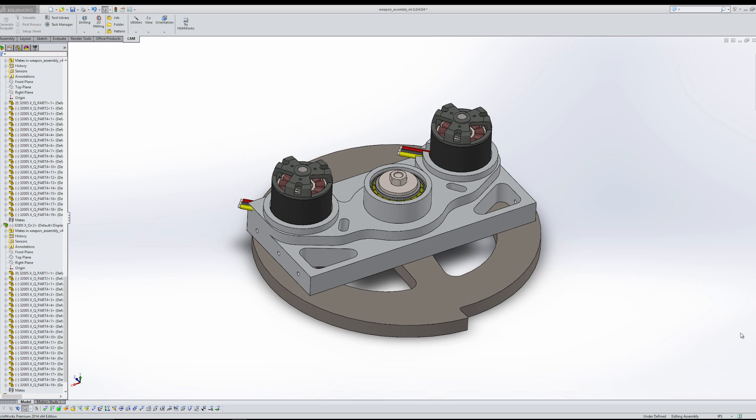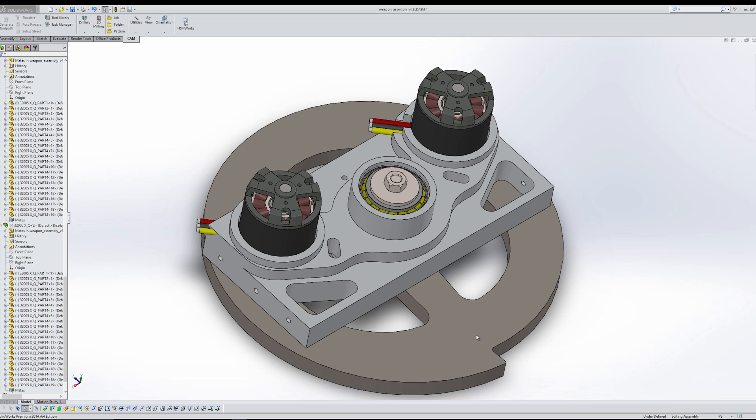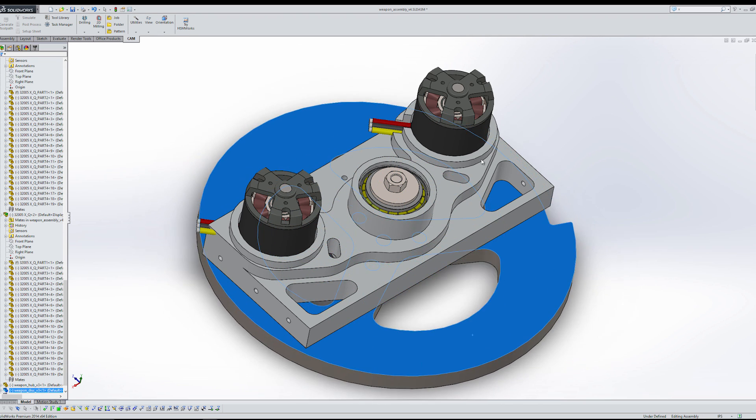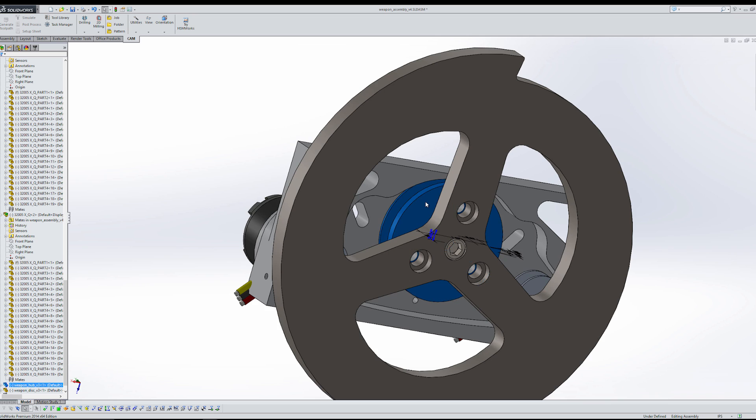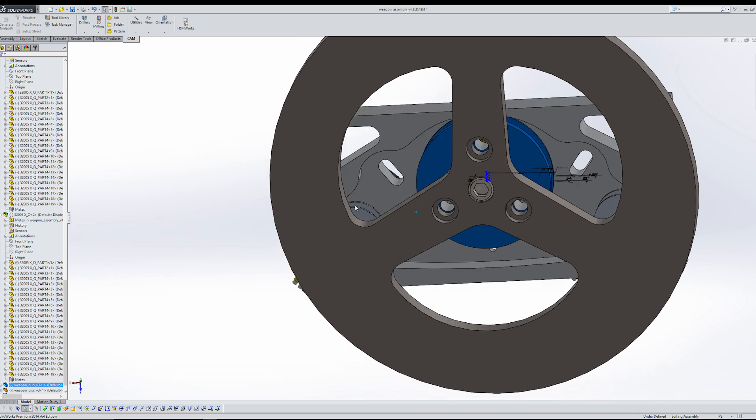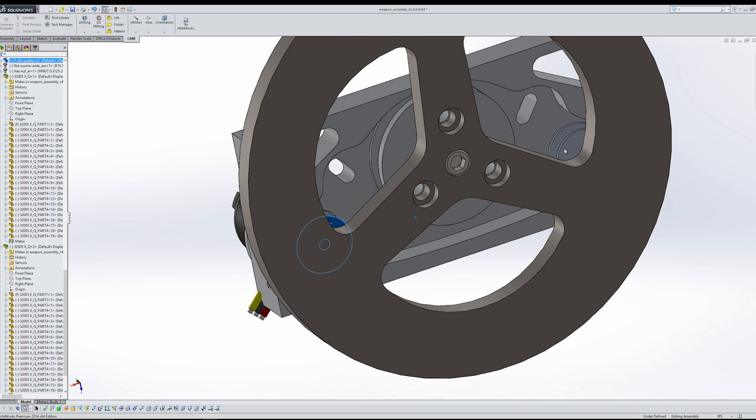Here is the weapon assembly for my combat robot. Down here you have the weapon, of course, which spins around. And attached to that is this weapon hub, which I made in a previous video, and then the pulleys, which I made in another video.